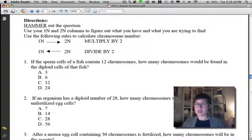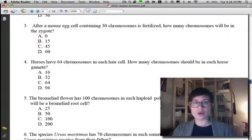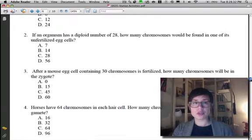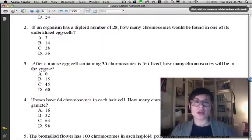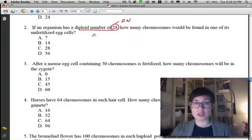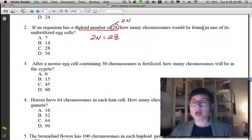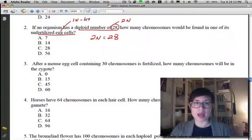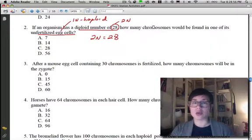Alright, let's go ahead and look at question number 2. For question number 2, it says if an organism has a diploid number of 28. So, 28 is my 2N number. So, I've been given my 2N number. I'm going to write that down so that I don't get confused. I want to know how many chromosomes would be found in an unfertilized egg. So, my unfertilized egg is going to be my 1N or my haploid number. So, this is the number that is an unknown. So, I'm going to be going from 2N to 1N.